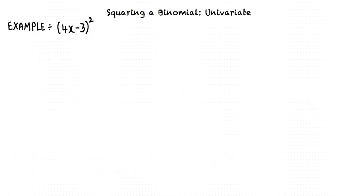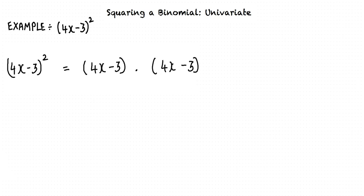Let us consider an example. We are required to square 4x minus 3. The first step is to treat it as a product of 4x minus 3 with itself. We can write 4x minus 3 whole square equals 4x minus 3 times 4x minus 3.